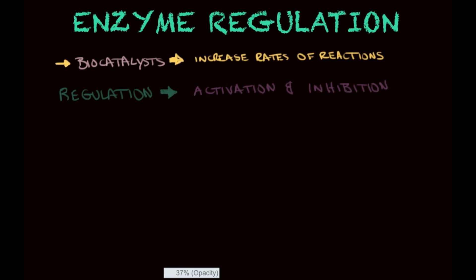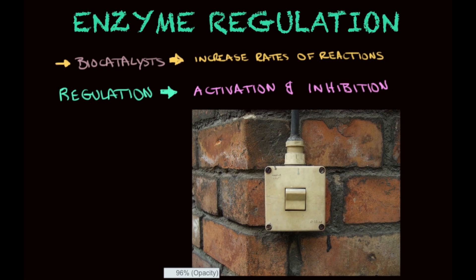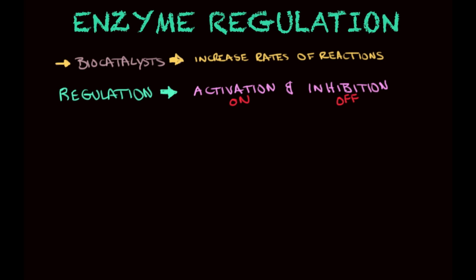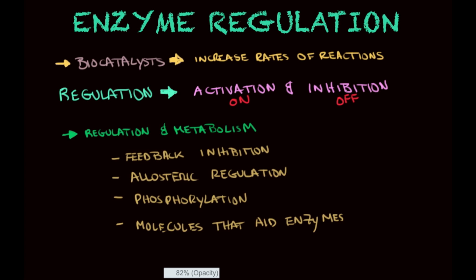When we talk about regulation, this is when enzymes — these proteins — are activated or inhibited. In other words, how they are switched on or switched off. We're going to learn how these enzymes can be regulated. A few concepts we need to look at before we talk about regulation, so you can understand how enzymes are activated and inhibited.